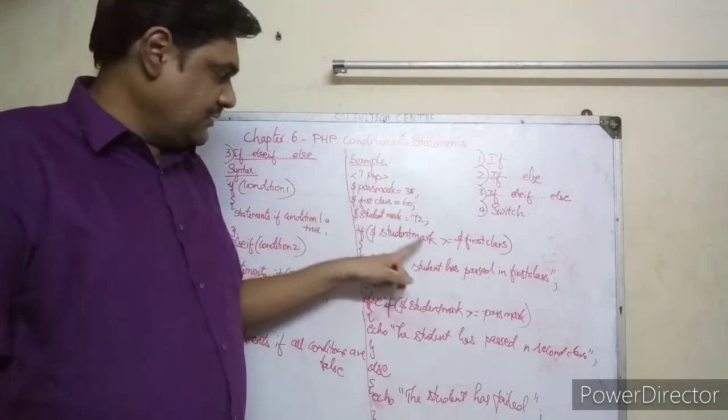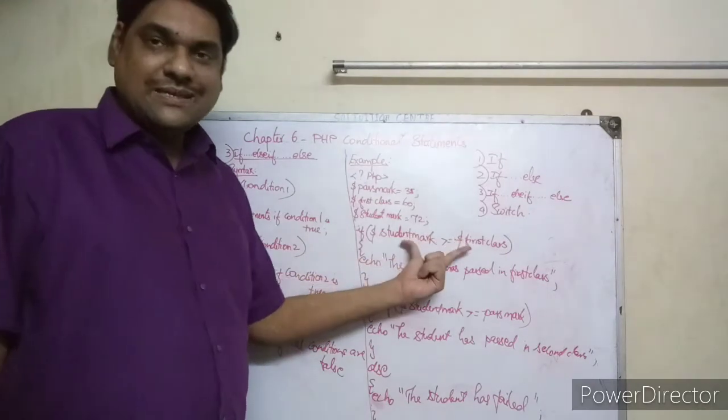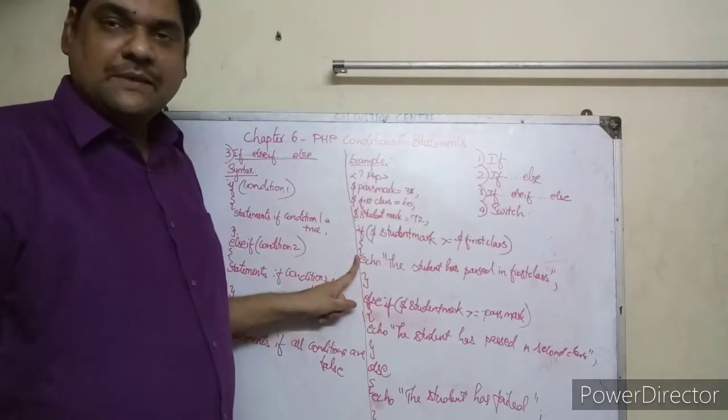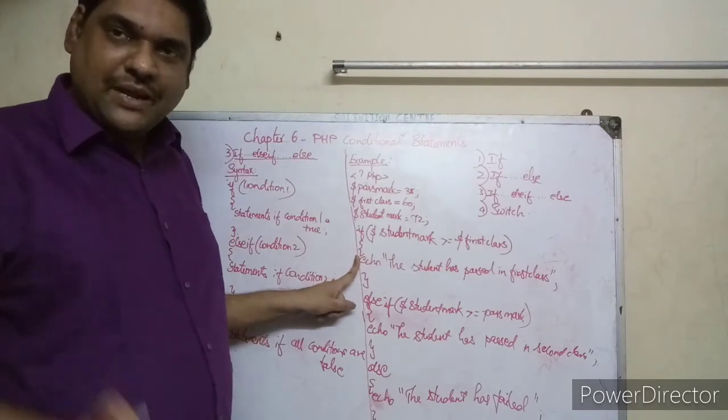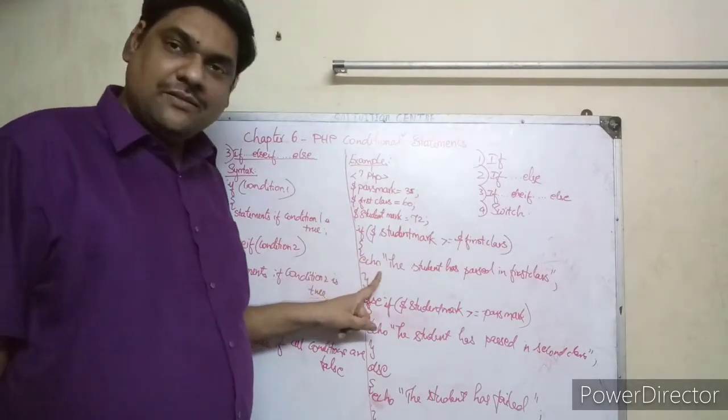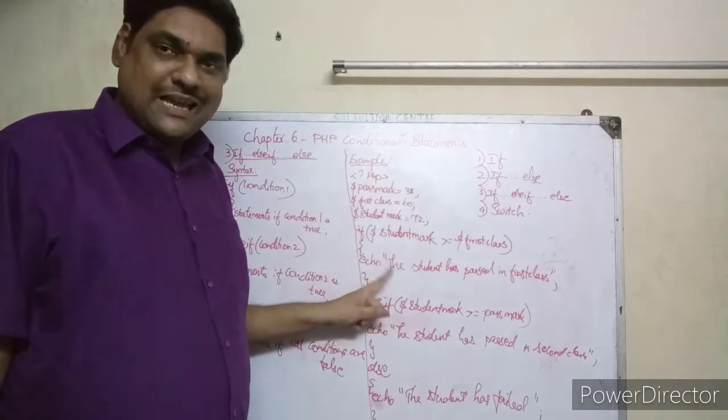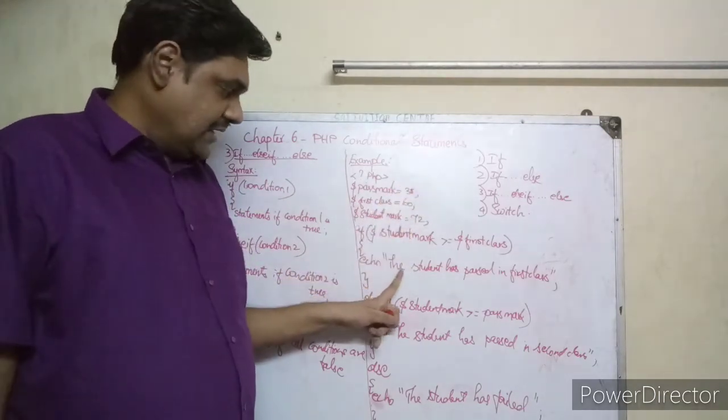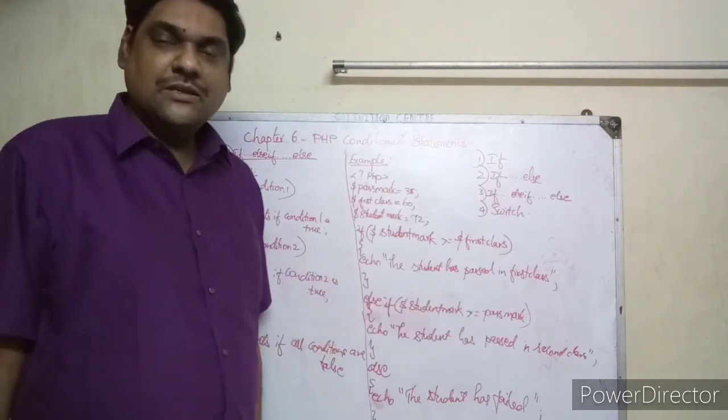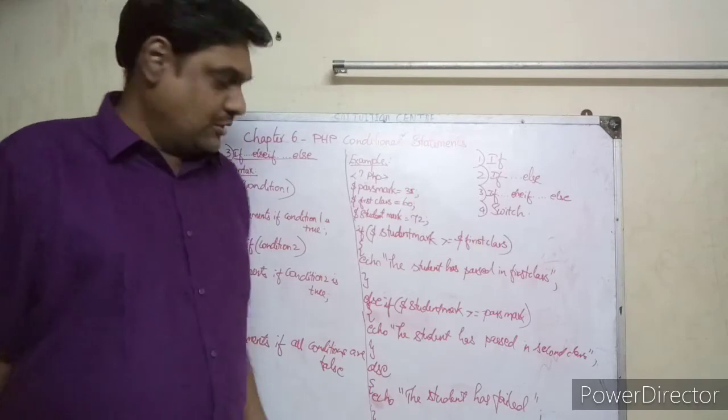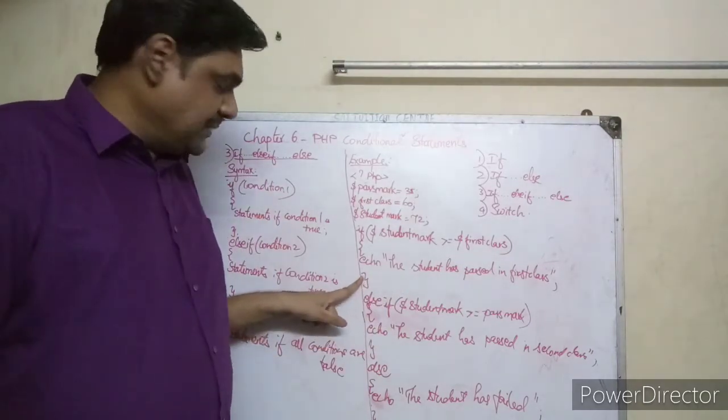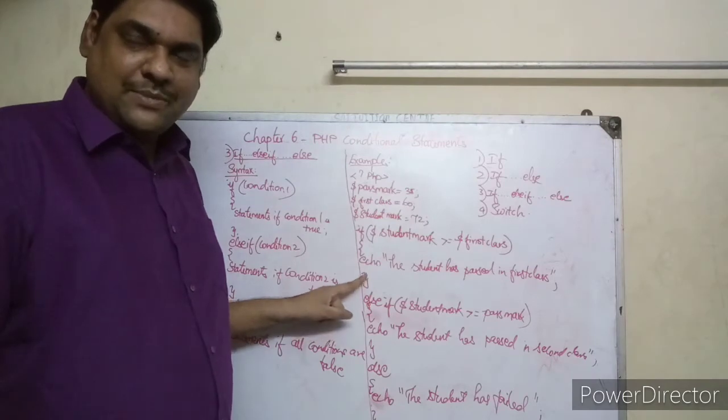Only when this condition is true, it will enter here, it will come inside the open curly braces. Then what you have said here? You have said to print, that is echo - display on the screen 'the student has passed in first class'.